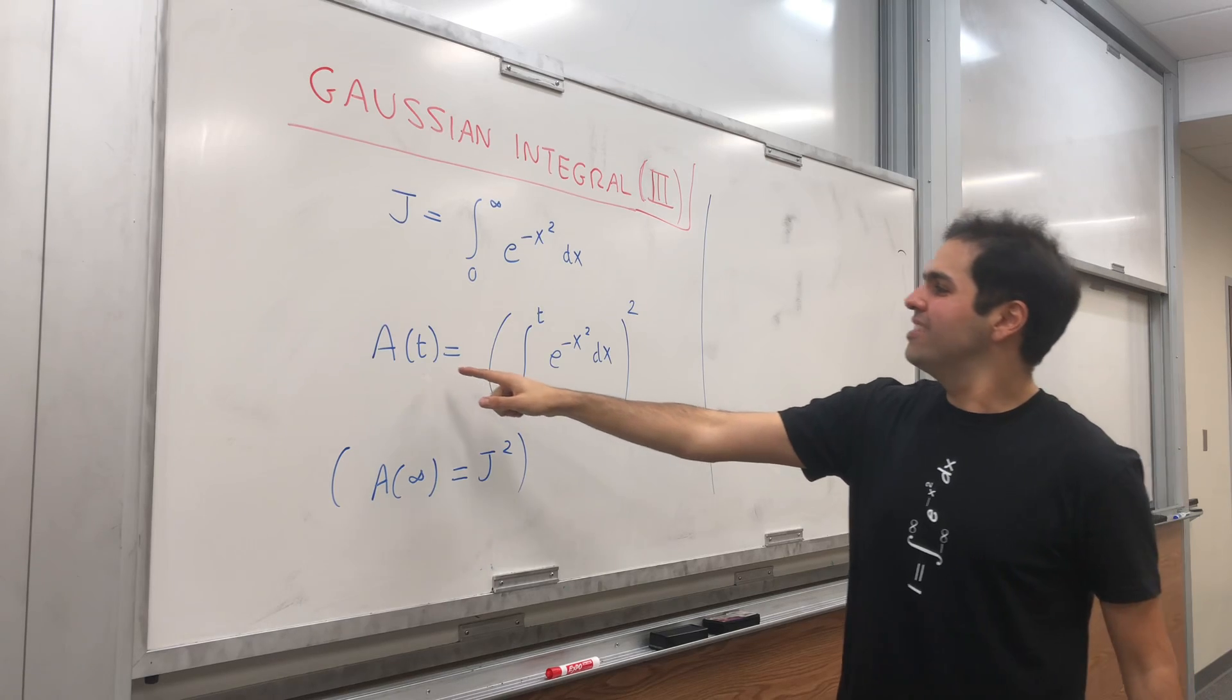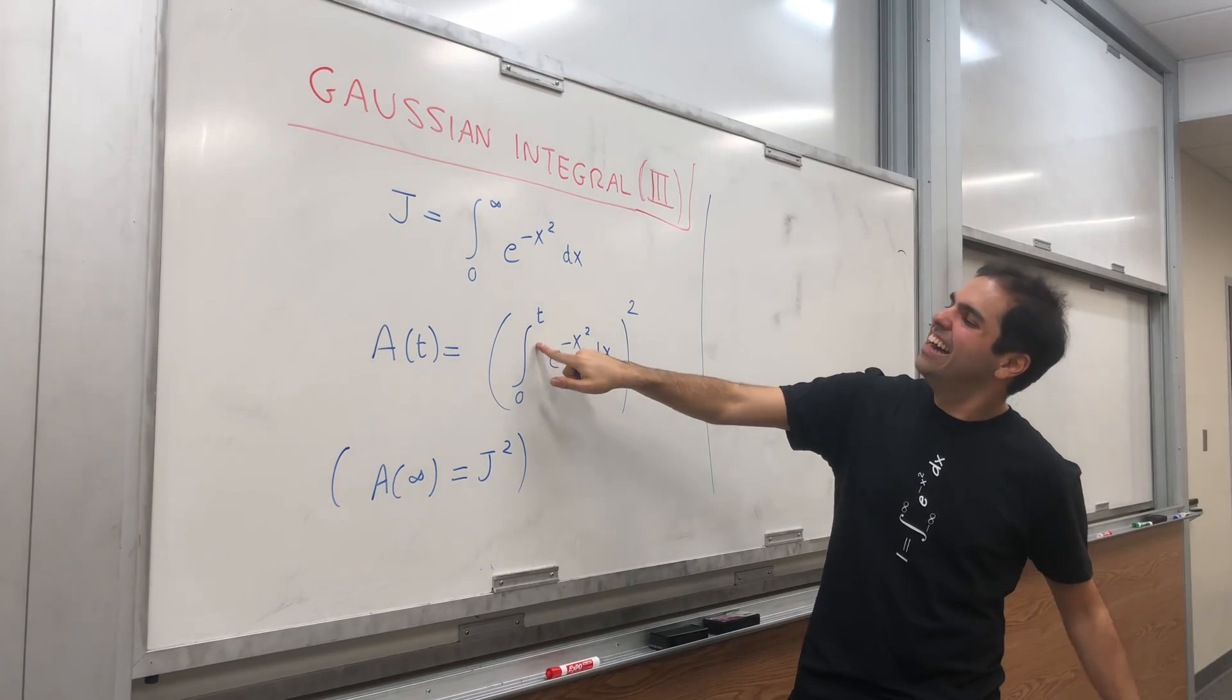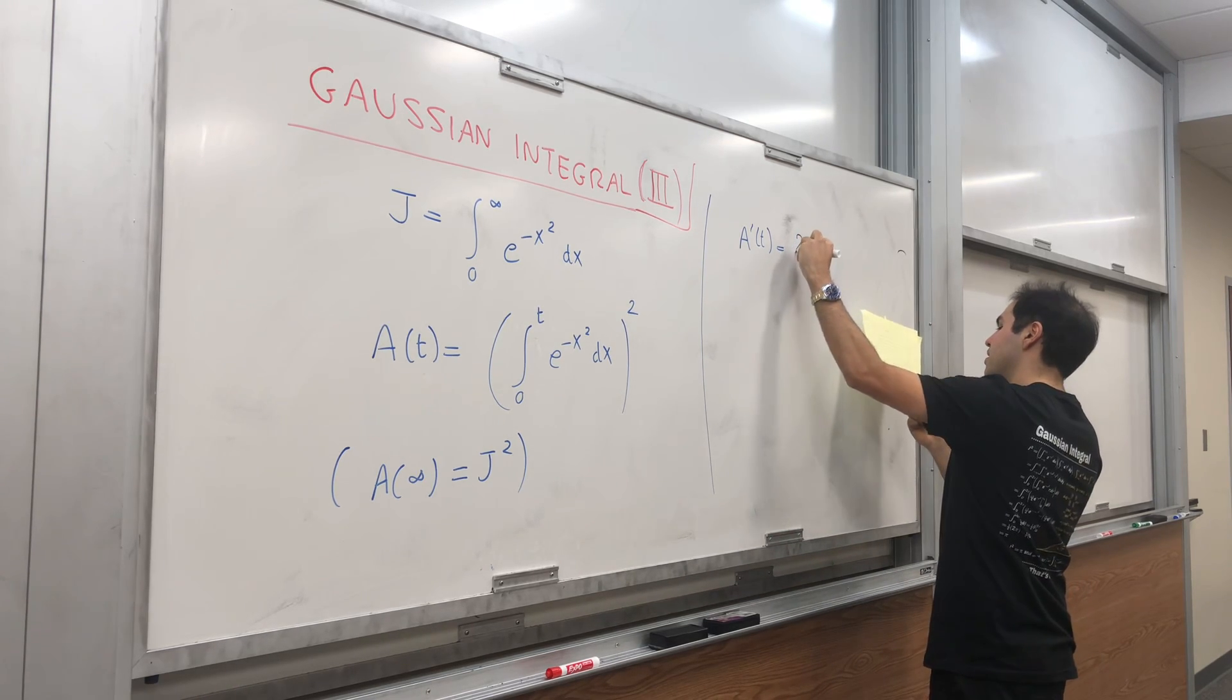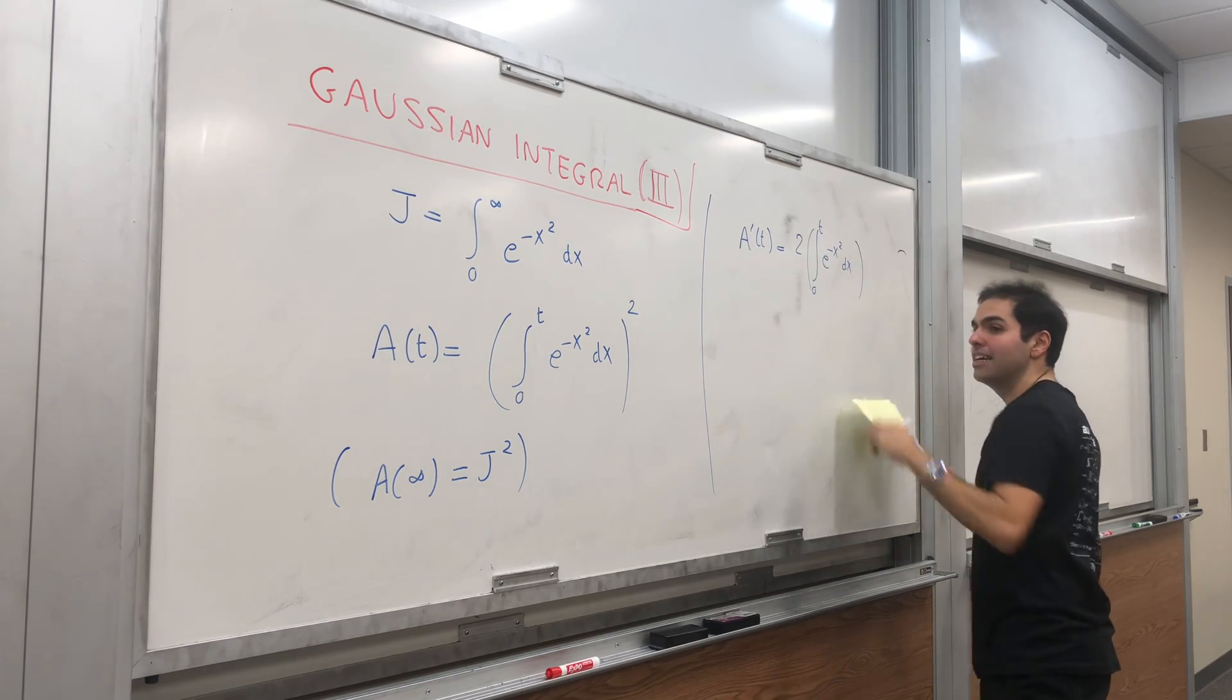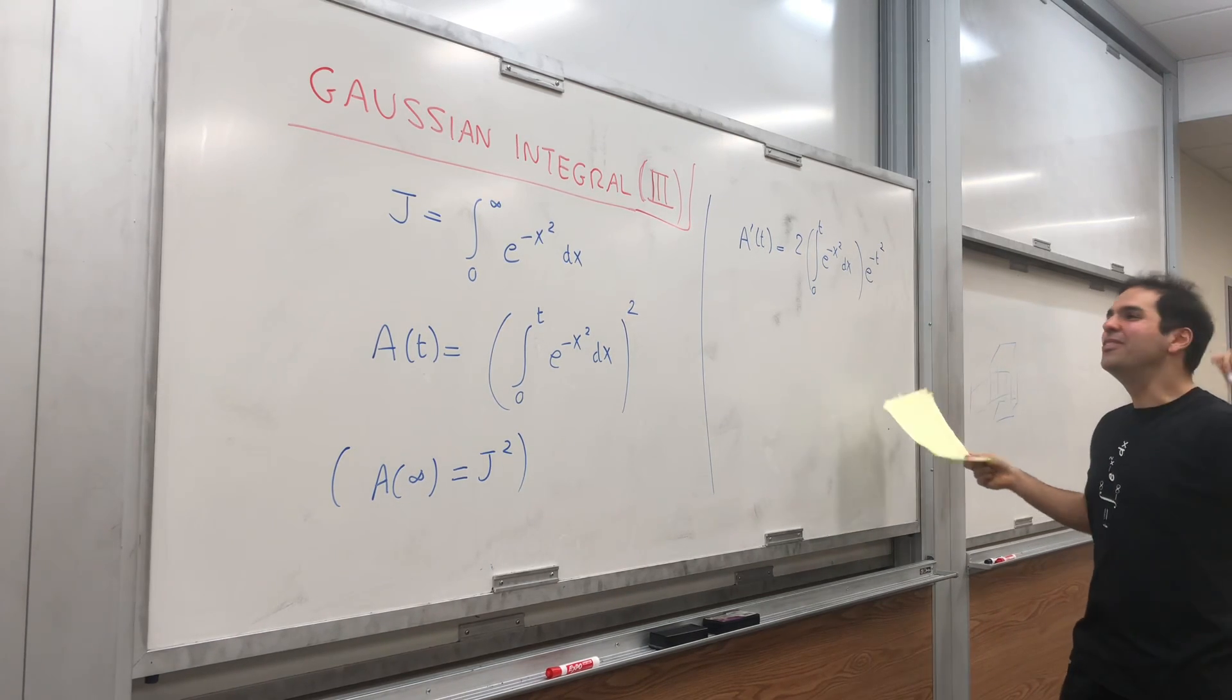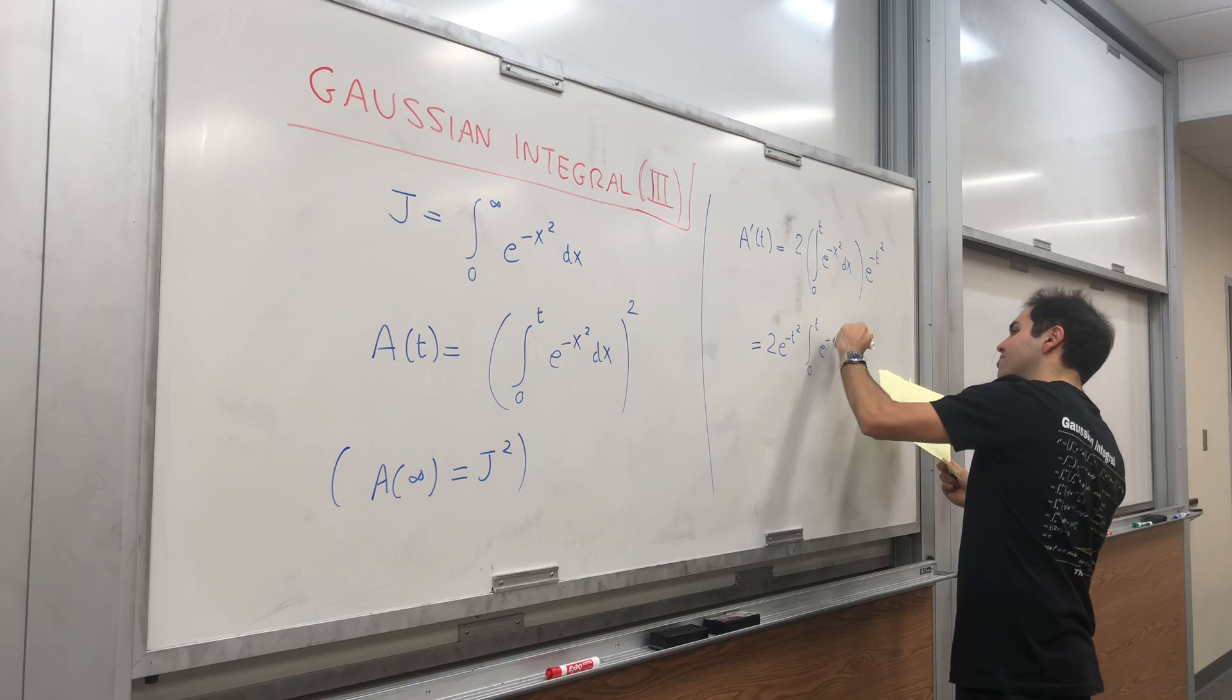Now the reason I wrote this in this form is because this is very nice to differentiate because it allows us to use the chain rule. What a coincidence. And in particular also the FTC. So, let's calculate that. So A prime of t, that is the integral of the outside, so two times the integral from 0 to t of e of negative x squared dx, times the derivative of the inside, which is just e of negative t squared by the fundamental theorem of calculus.